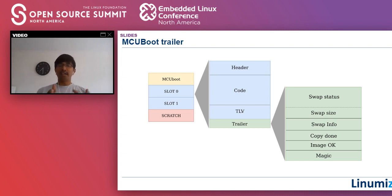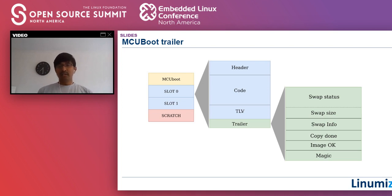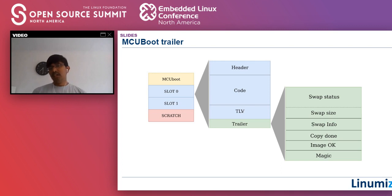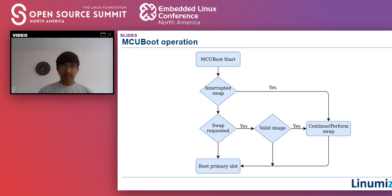Expanding the trailer: we have swap status, swap size — containing the total size of the image to be swapped from slot 1 to slot 0 — and swap info which contains swap type and swap number. By inspecting this metadata MCU Boot decides whether it needs to resume from a previous point or start fresh for swapping the image. There is also a magic value at the end of the image slot.